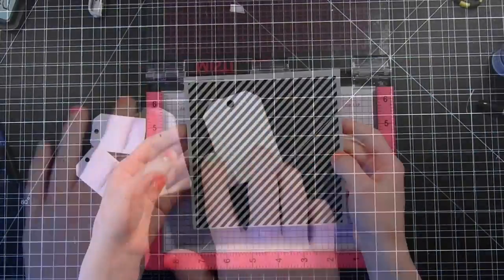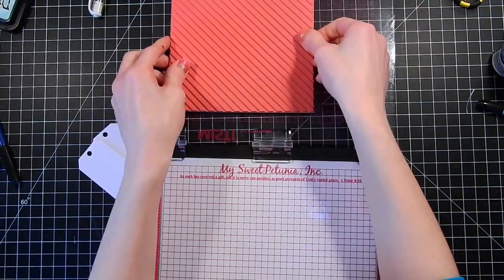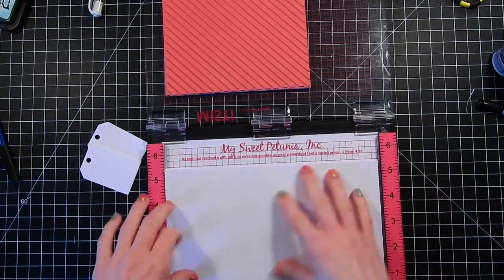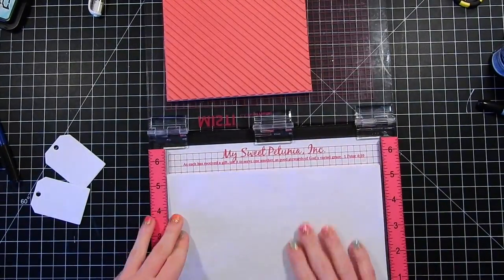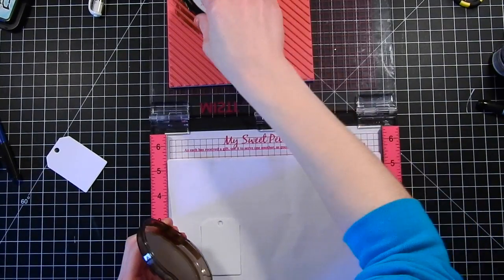Here I'm taking some Altenew Crisp Inks, this is Ruby Red and Forest Glades. I'm going to be doing some stamping using this diagonal stripe stamp from Simon Says Stamp. I'm going to be stamping a background onto these cardstock tags that I've die cut, this is using the same Jolly Tag stamp die.